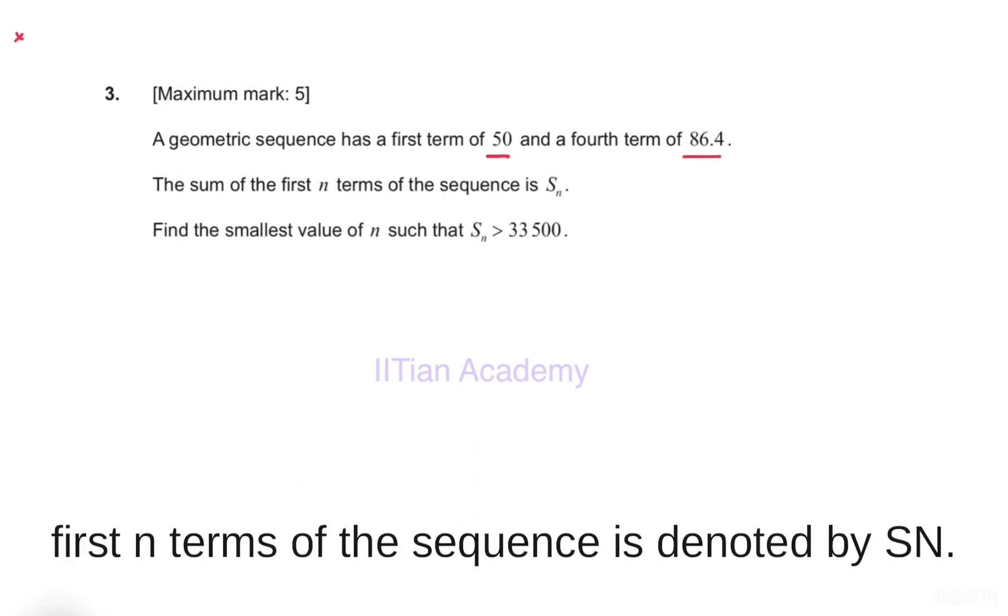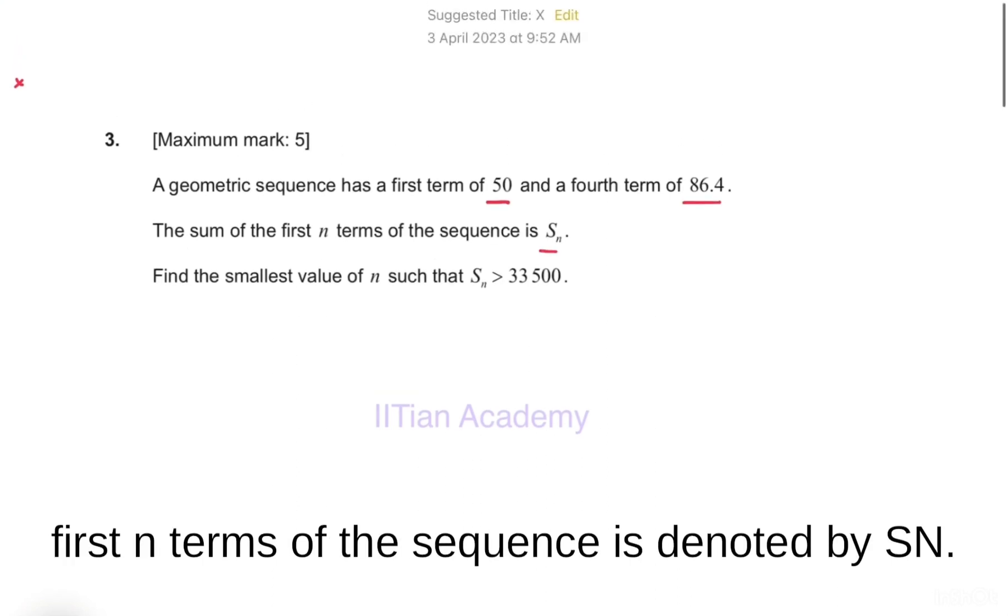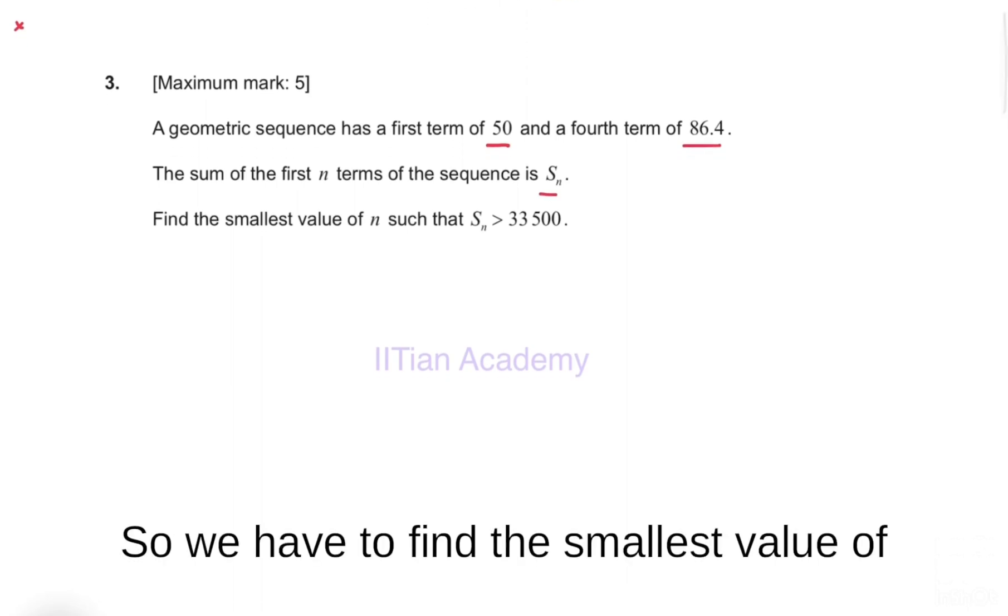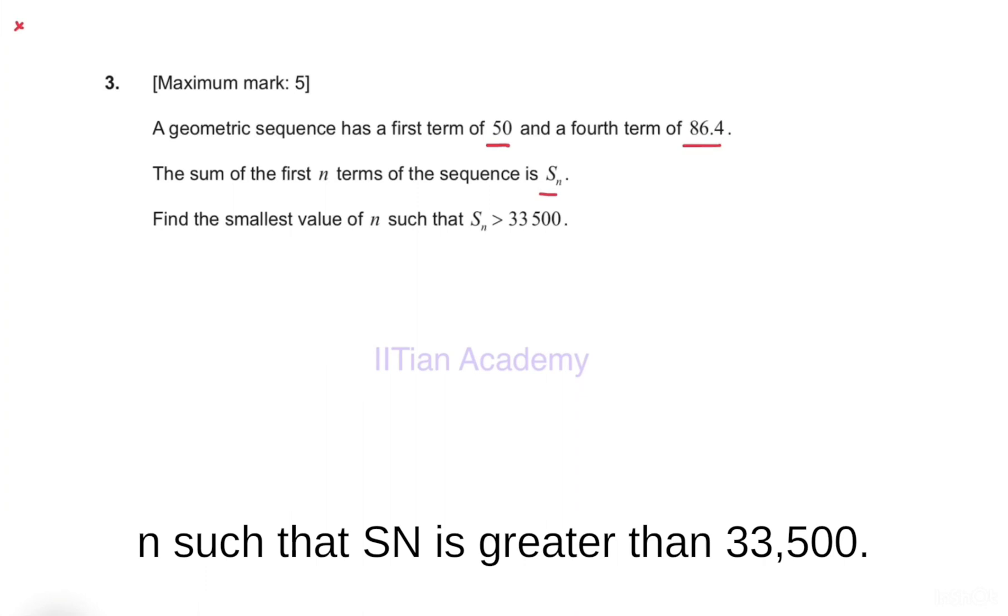The sum of first n terms of the sequence is denoted by Sn. We have to find the smallest value of n such that Sn is greater than 33,500.